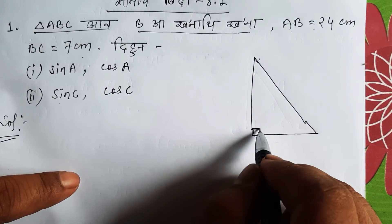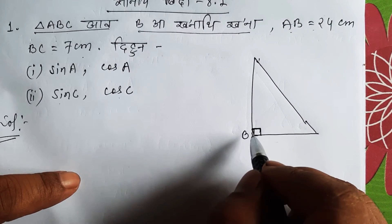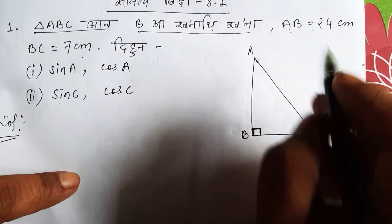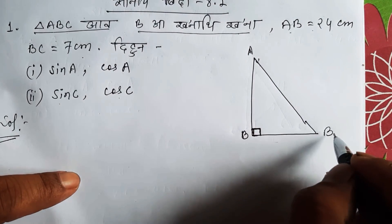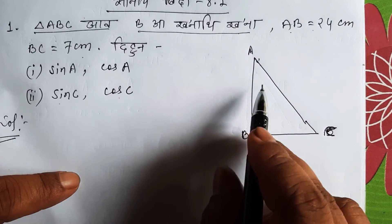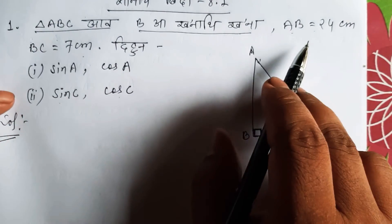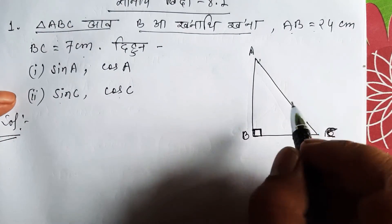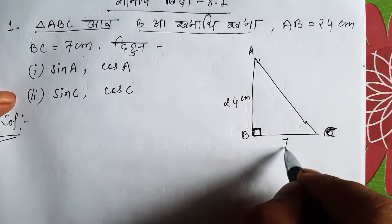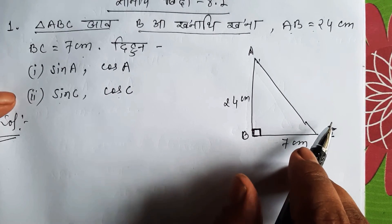We're looking at 8.1. This is 90 degrees. This is 24 cm and this is 7 cm. This is what it means.